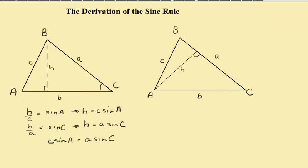With a little algebraic manipulation, dividing both sides by sine C and sine A, we can see that C over sine C equals A over sine A.